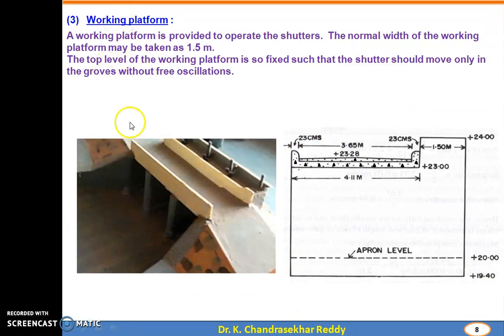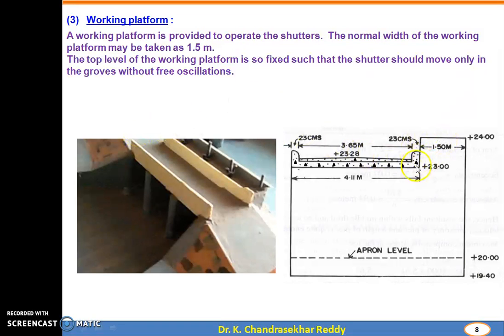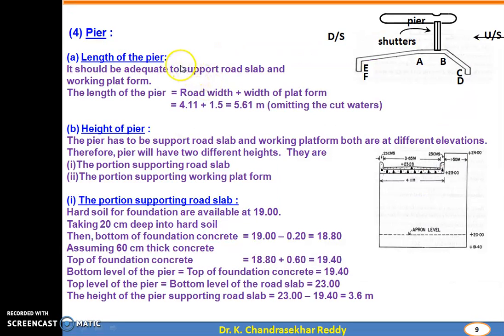Working platform: this is the road and this is the working platform. A working platform is provided to operate the shutters. The normal width of the working platform may be taken as 1.5 m. The top level of the working platform is fixed such that the shutters should move only in the grooves without free oscillation. This level should be designed so shutters move in the grooves only and not oscillate freely in the air.